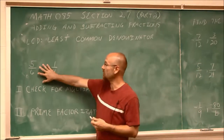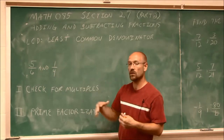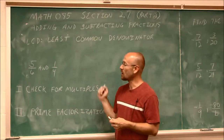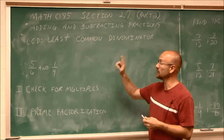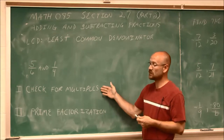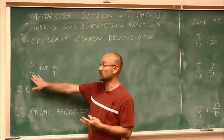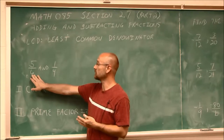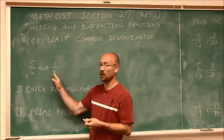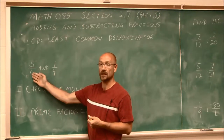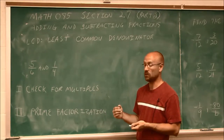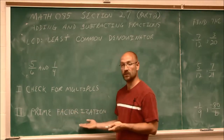Let's say we want to add 5/6 and 1/4. In order to add or subtract fractions, they have to have the same denominator. Our method to get that same denominator — find the LCD, the least common denominator — the first thing we want to do is look at the larger of the two numbers and determine if it is a multiple of the other. I can't multiply a whole number times 4 to get 6, so in this example there are no multiples. The next method is prime factorization.